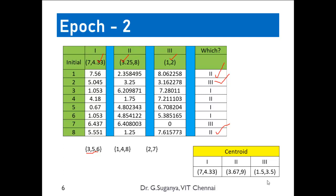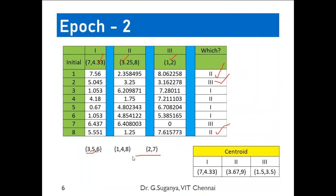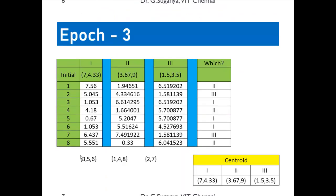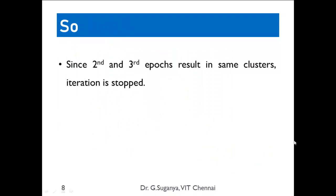Again we compute the cluster centroids, and these become the leaders for epoch 3. The same process continues. In epoch 3, we end up with the same elements in the clusters: cluster 1 has 3, 5, 6; cluster 2 has 1, 4, 8; and cluster 3 has 2 and 7 — the same as in epoch 2. Since the second and third epochs result in the same clusters, iteration is stopped. We can optionally compute the sum of squared errors using the final centroids.